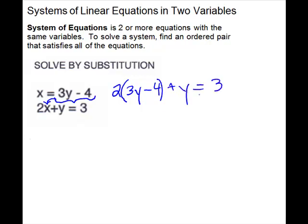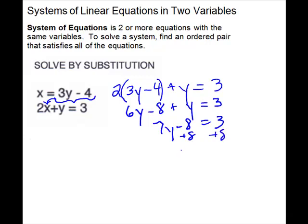And then we solve. Distributing the 2 gives us 6y minus 8 plus y equals 3. Put your y terms together: 7y minus 8 equals 3. Add your 8 to both sides. So 7y equals 11, and divide by 7.